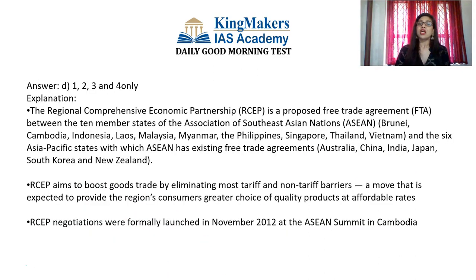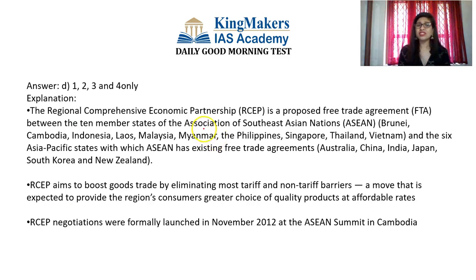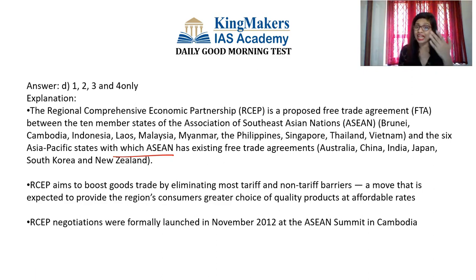The next question: consider the following statements with respect to special category status. Statement one: the Constitution does not have any provision for categorization of any state as a special category status. Statement two: currently 11 states have special category status in India. The keyword in the second statement is '11.' Initially, 3 states were given special category status — Assam, Nagaland, and Jammu & Kashmir. Since then, 8 more states have been included, making the total 11.